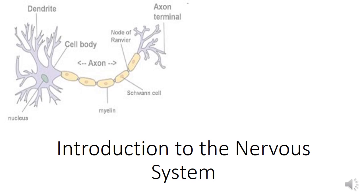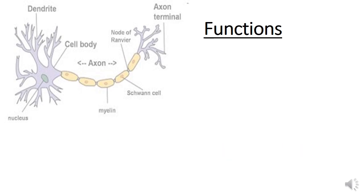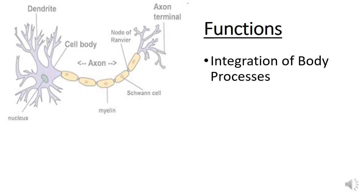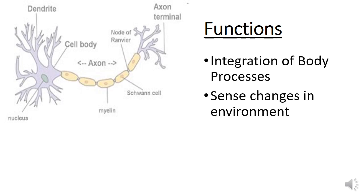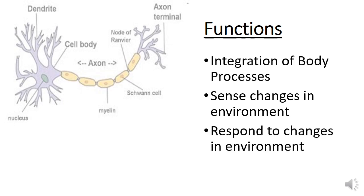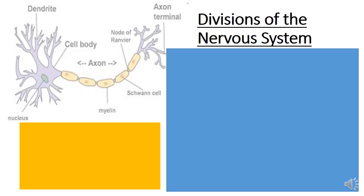We're looking at an introduction to the nervous system. When we're talking about the nervous system, we're talking about the integration of body processes — this is how we get our heartbeat, our breathing, our digestion — all of these things to work together. We will sense changes in the environment: is it hotter, is it colder, is there something poking you? And then we will respond to those changes — if it's colder you might shiver, if it's hotter you might start to sweat.